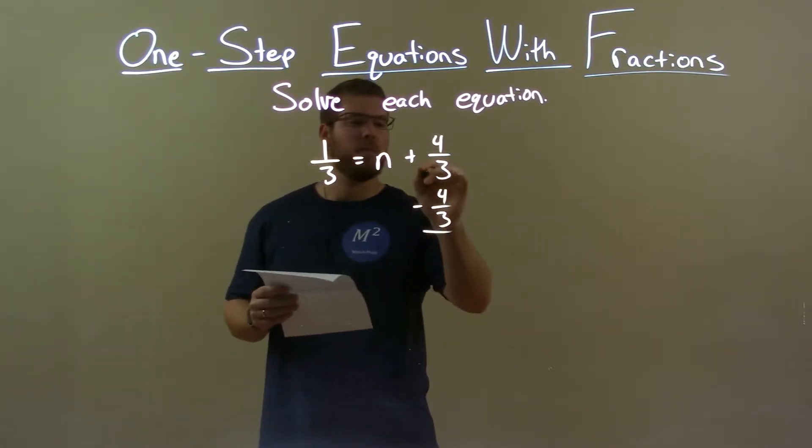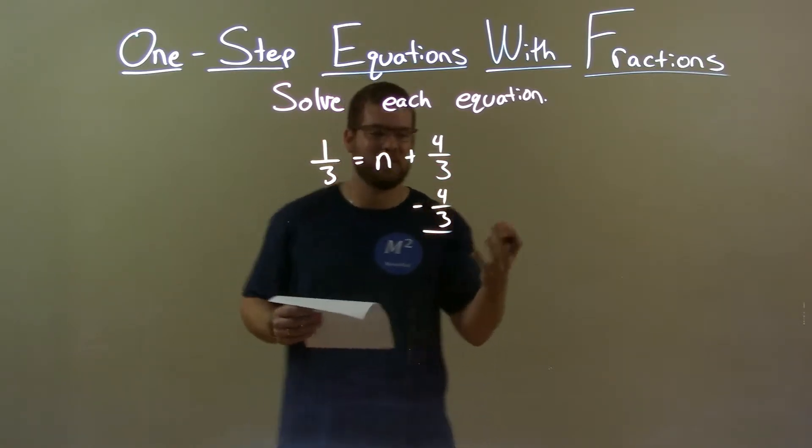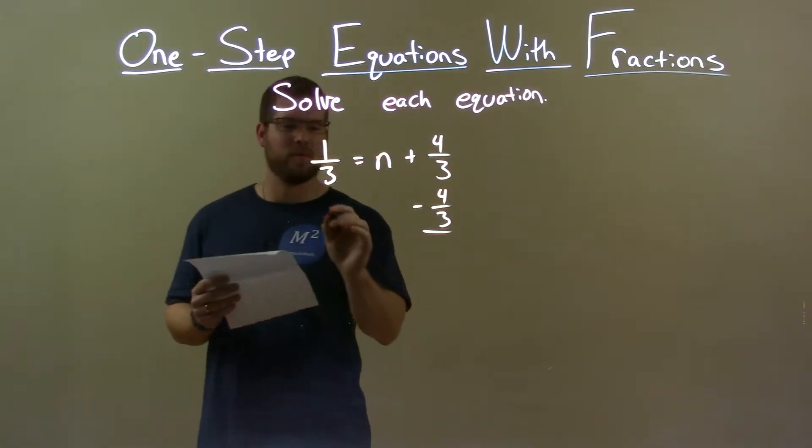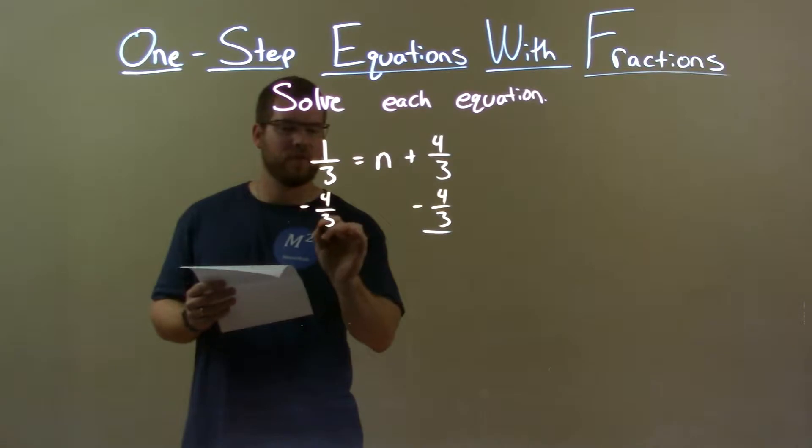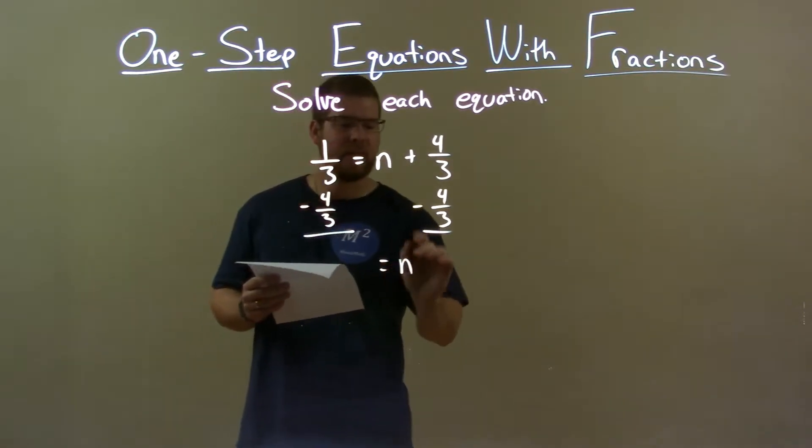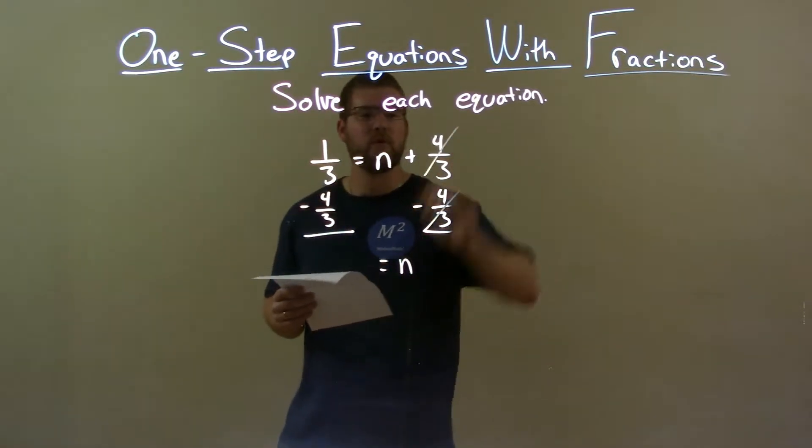Now, we have plus four-thirds, opposite addition, subtraction, so that's why we subtract four-thirds from both sides. We minus four-thirds here, okay? n is by itself on the right because the four-thirds will cancel.